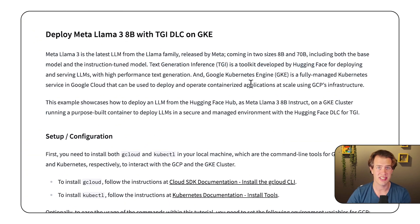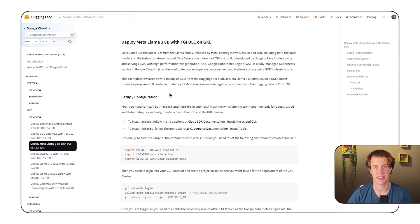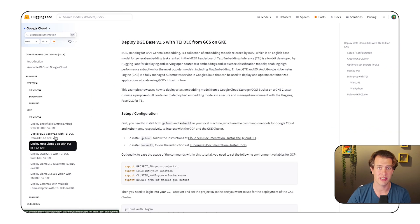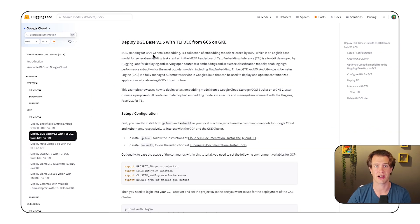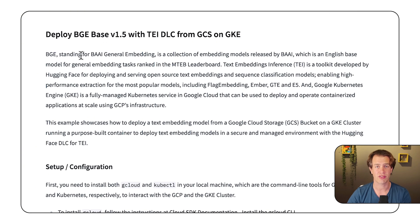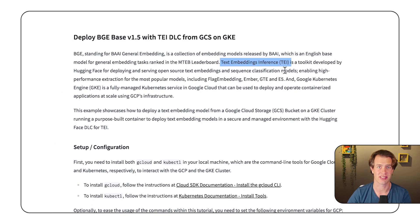Use the TGI container for text generation and run it on Cloud Run, GKE or Vertex AI. For generating text embeddings, use the TEI container.